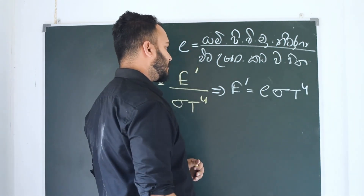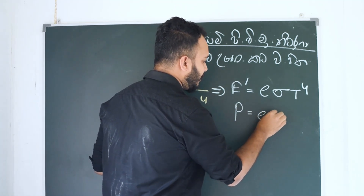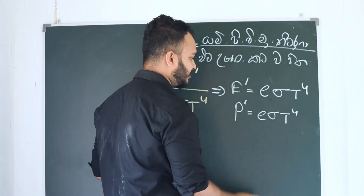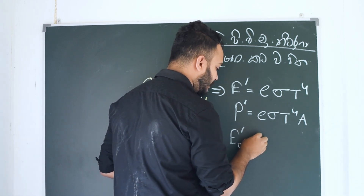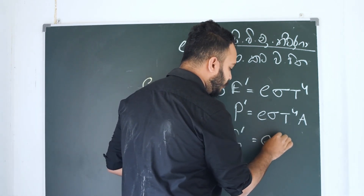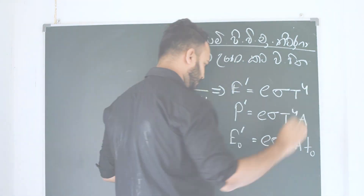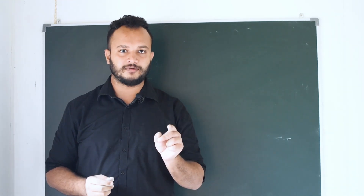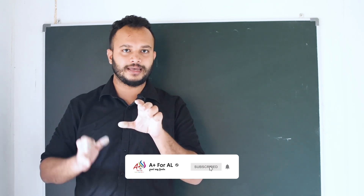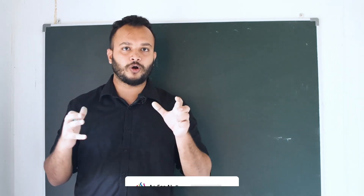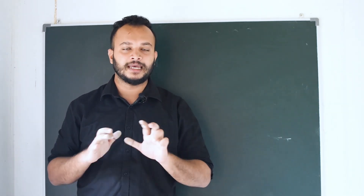E to sigma T, to sigma T, to sigma T. This power is the power of the e-dash and the t-note. This is the power of the e-dash and the e-dash.